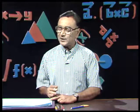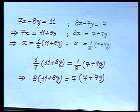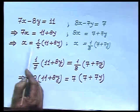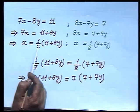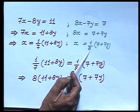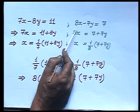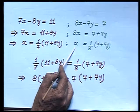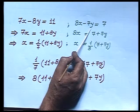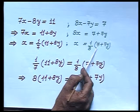Let us have a look at a system of equations. The system is 7x minus 8y equals 11 and 8x minus 7y equals 7. For the first equation, making x as a subject: x equals (1/7)(11 plus 8y). For the second: x equals (1/8)(7 plus 7y). Remember, if I make x the subject from the first equation, I will make x the subject from the second equation as well.